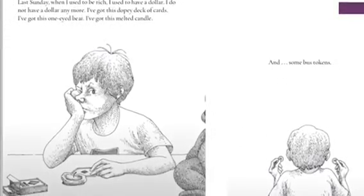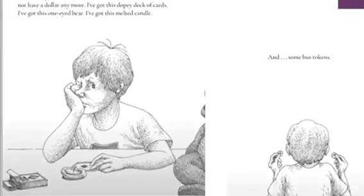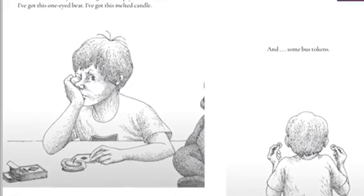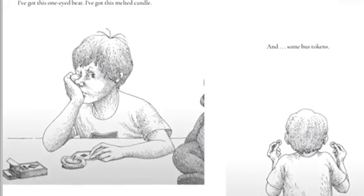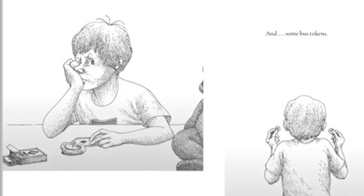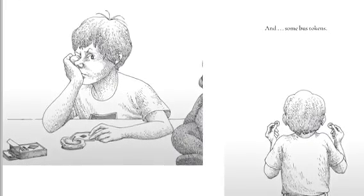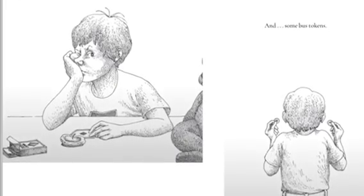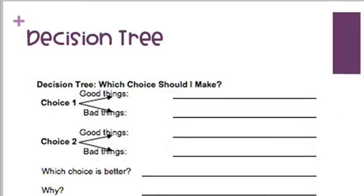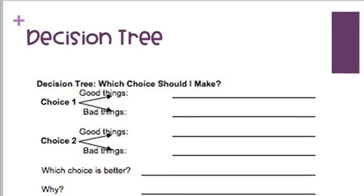Looks like he's regretting spending his money. Last Sunday, when I used to be rich, I used to have a dollar. I do not have a dollar anymore. I got this dopey deck of cards, this one-eyed bear, this melted candle, and some bus tokens. Alexander made the economic choice of spending his money instead of saving his money.